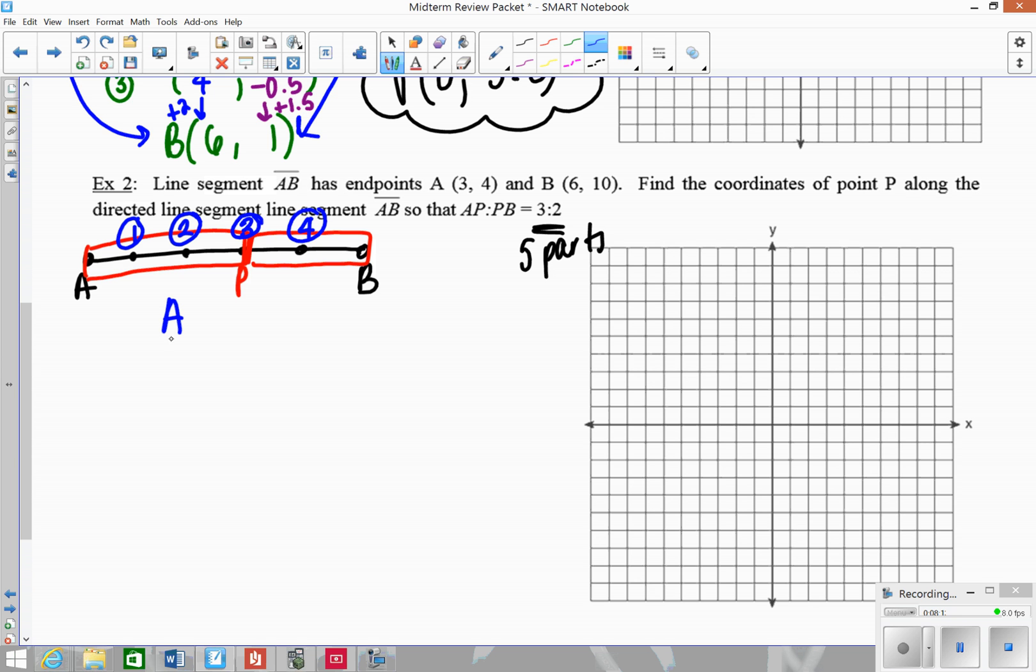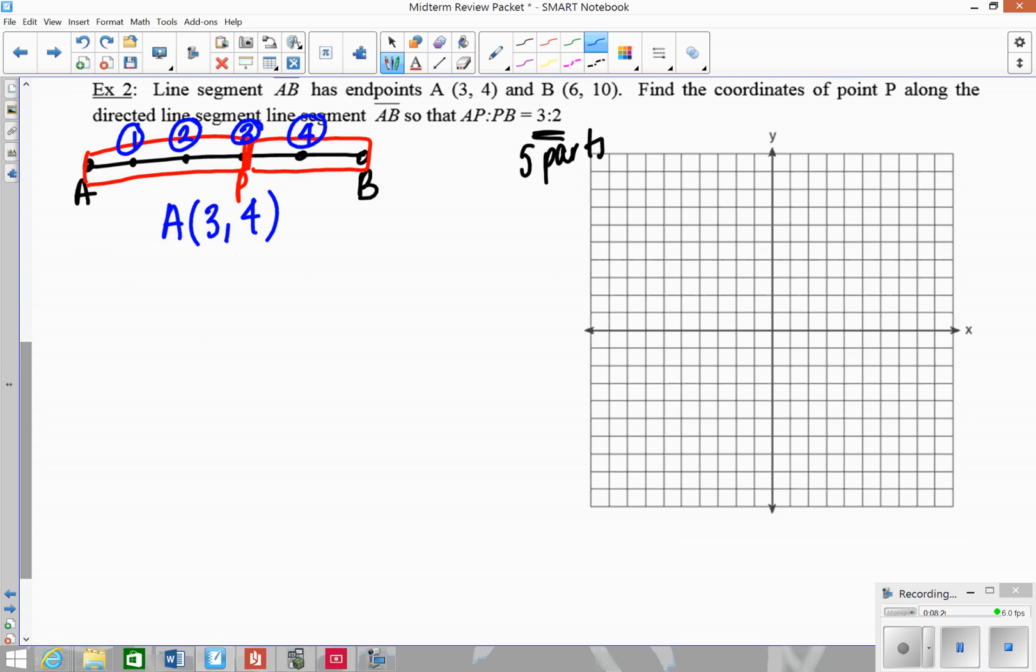That means when I go to find these coordinates, I'm going to find the first point, the second point, and the third point will actually be my P, and then the fourth point will also be in there. So I'm going to start by writing my coordinates. So I have 3, 4, and then give yourself enough space to include those coordinates between. So B is going to be 6, 10. And then, set this up so we have 4 points that have to go in between here so that we have 5 parts. And the important coordinate is going to be our number 3 coordinate here. That's going to be point P.